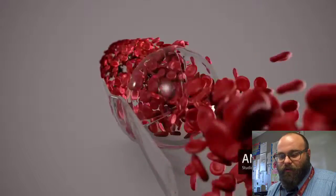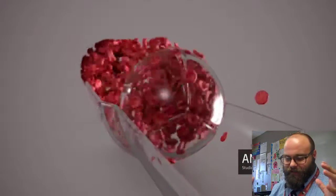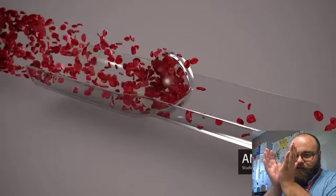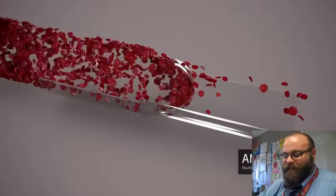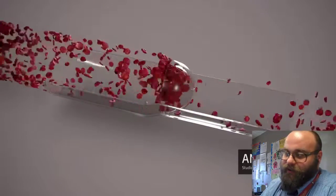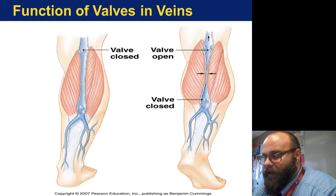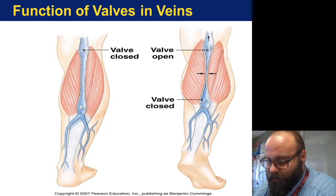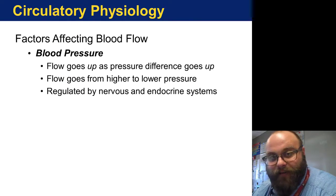This is why you can still function if you're hanging upside down — these systems of valves open and close depending on what your body needs to maintain homeostasis. We can see in a diagram of a leg that a valve is closed when blood is flowing towards the muscles, and when the blood needs to move away from the muscles, those valves will open up.